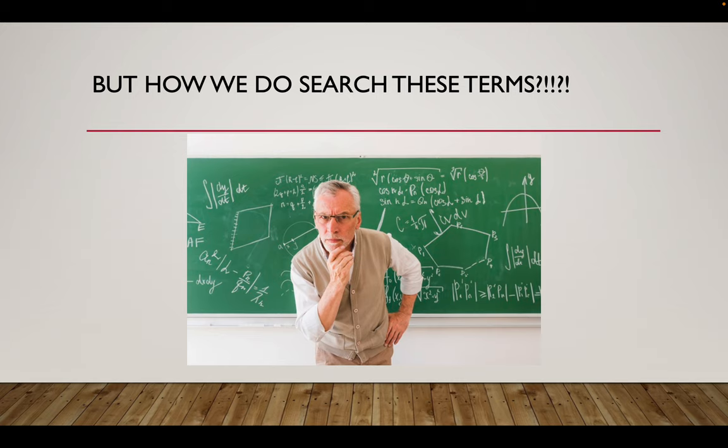When Google, the library, or any search engine has an item, it looks at it through a computer and makes a list of all the words in it — or a human has gone in and read it and made key terms. These key terms are really what you're searching, and the computer does this through Boolean logic.